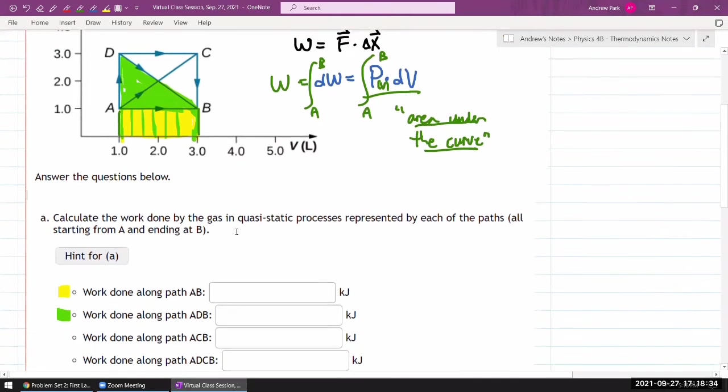Work done along path ACB. So that would be work done along ACB. That would be, the path is this and we want the area under that curve. So I'm just going to color the portion that I haven't colored before, but it also includes everything under this curve. So all of the yellow before and some portion of the green previously.